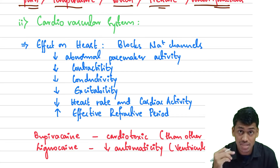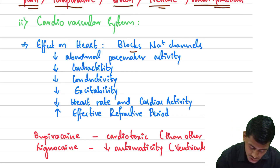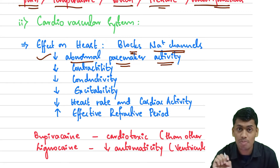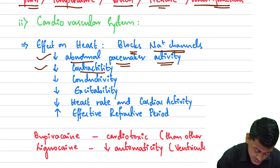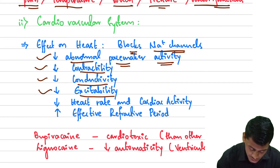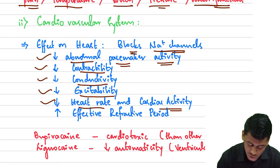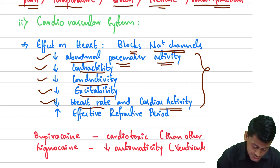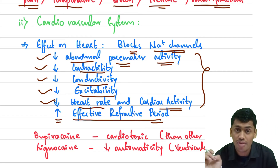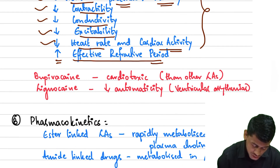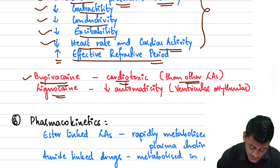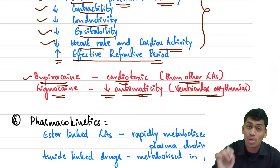Moving on to the cardiovascular system — effects on the heart: local anesthetics block sodium channels in the heart, thus decreasing the abnormal pacemaker activity. They decrease contractility, conductivity, excitability, heart rate, and cardiac output. They also increase the effective refractory period. Notably, bupivacaine is cardiotoxic compared to other local anesthetics. Lignocaine decreases automaticity, making it helpful in ventricular arrhythmias as well.